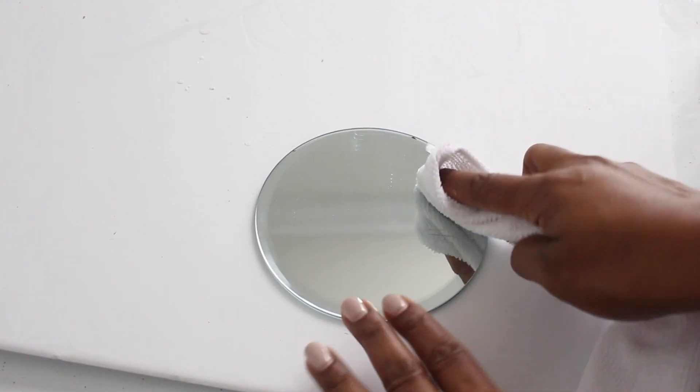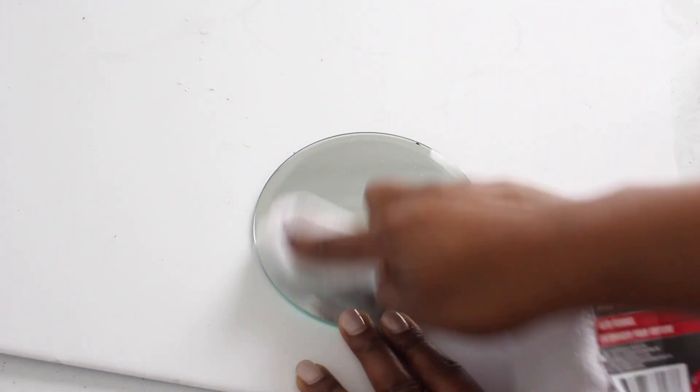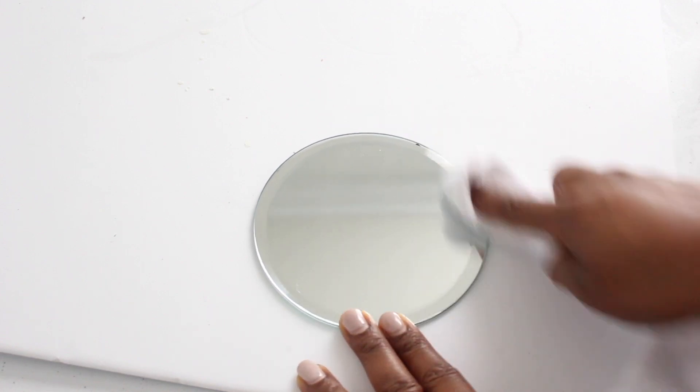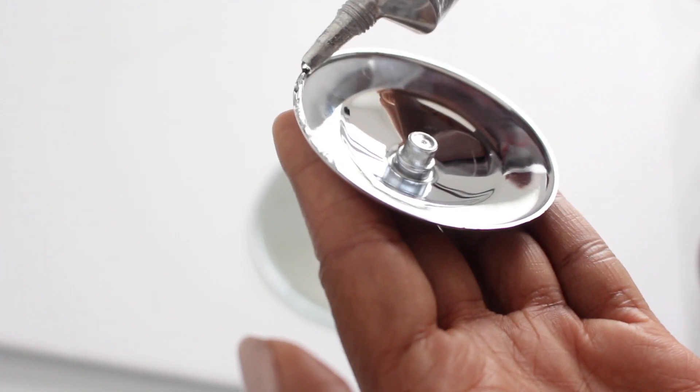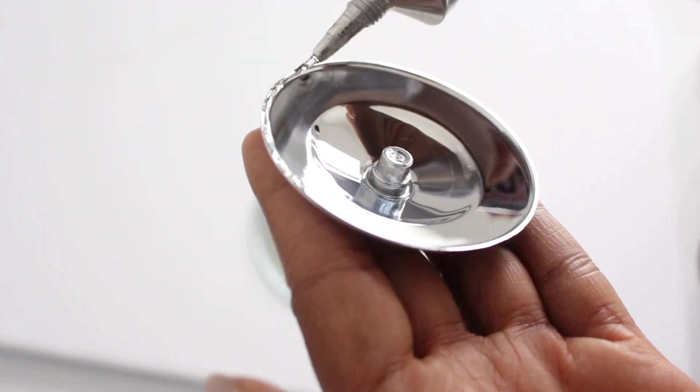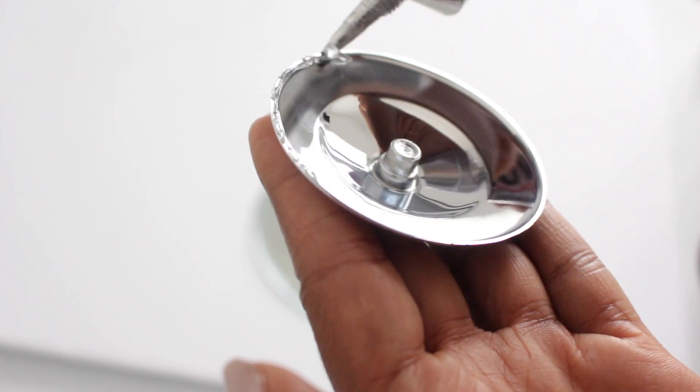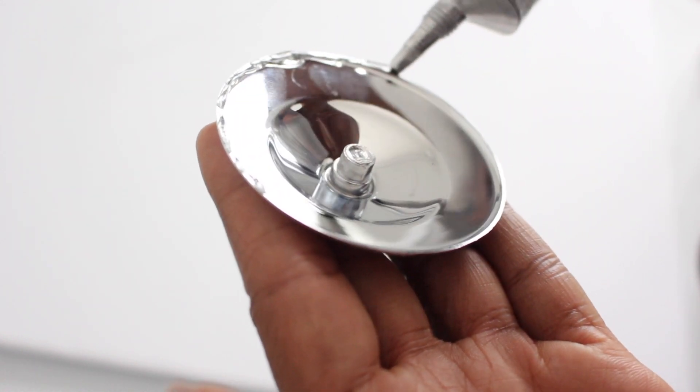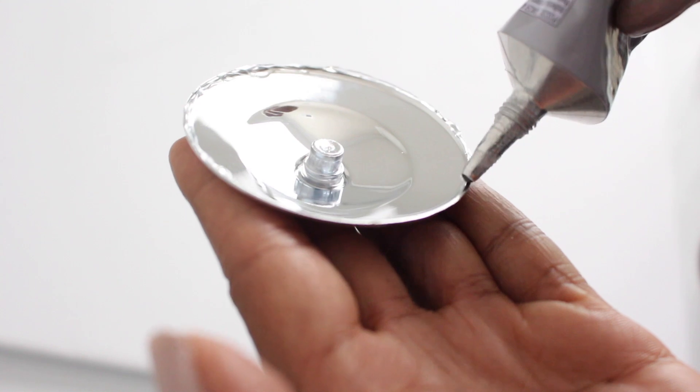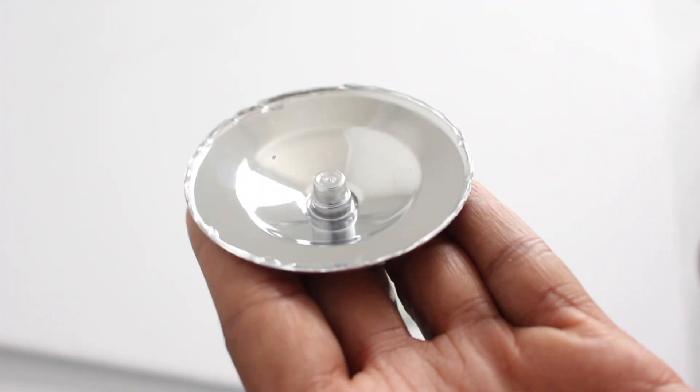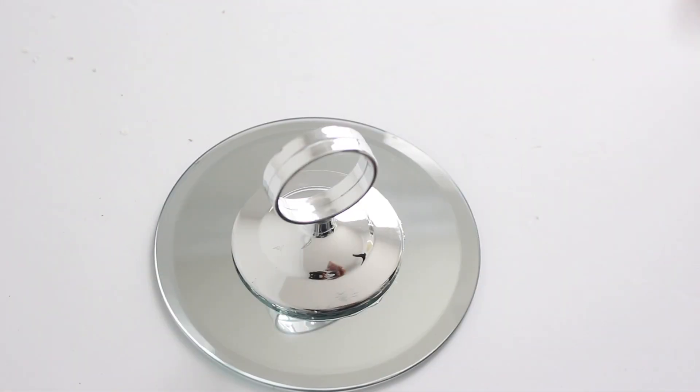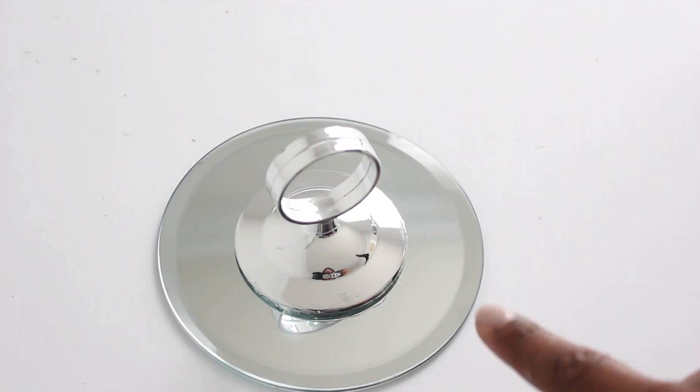So first I'm going to wipe down everything - my mirror and my auto funnel - with alcohol. Now I'm going to take some of my E6000 and put it on the edge of this card holder. Next I'm going to stick the card holder in the center of the mirror and I'm going to let this dry for a couple of hours.